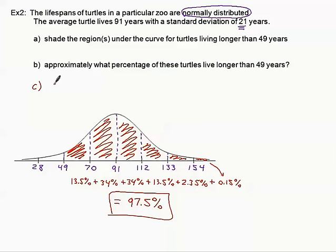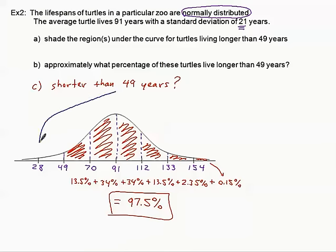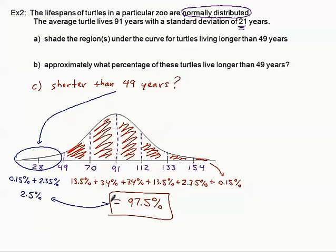Part C: what percentage of turtles live shorter than 49 years? We're now talking about the two regions below 49 years — that's 0.15% and 2.35%, which together make about 2.5%. I could also have gotten that by subtracting our 97.5% answer from 100%.